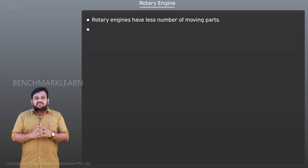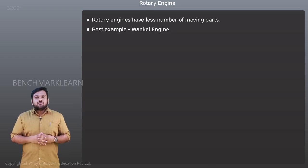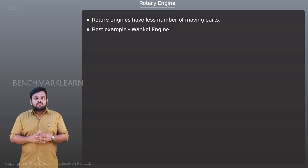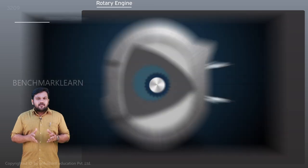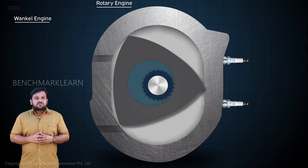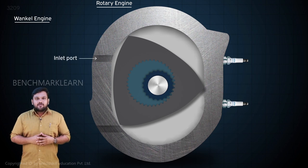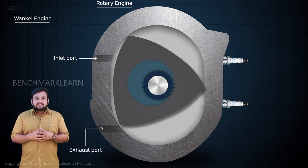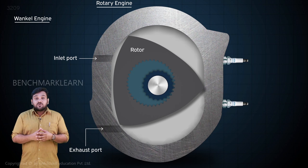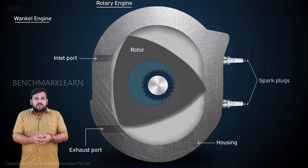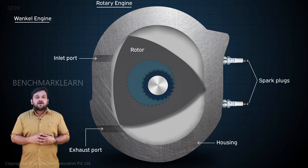Perhaps one of the best examples of a rotary engine would be the Wankel engine. Let us look at its working principle. The Wankel engine consists of the inlet port, the exhaust port, and an eccentrically rotating rotor which rotates inside an epitrochoid shaped housing, and a spark plug.